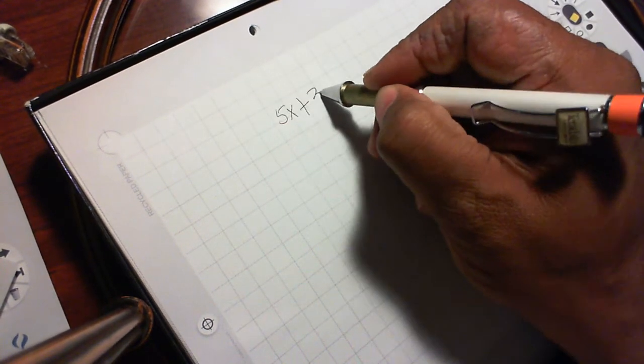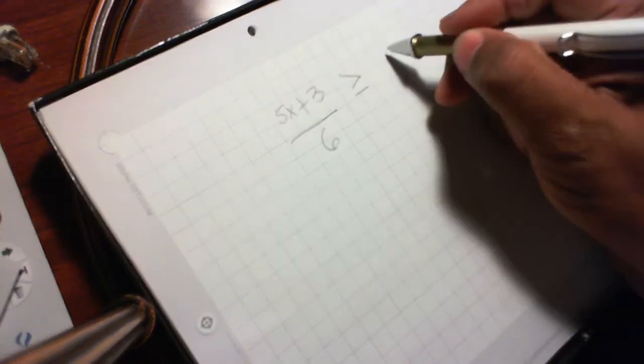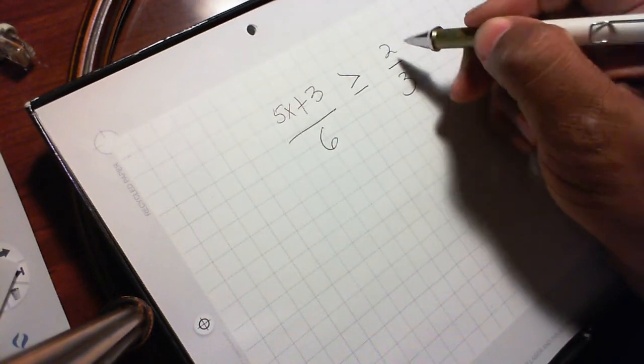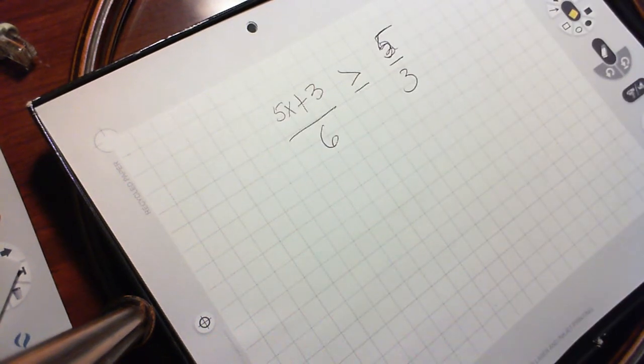5x plus 3 over 6 is greater than or equal to 2 over 3. I'm sorry, 5 over 3.